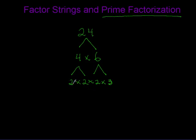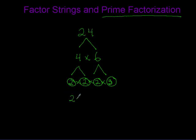Two is a prime number — the only even prime number — so we're going to go ahead and circle those. Three is also a prime number, so we're going to circle that. So if we're going to write the prime factorization of 24, we would write two times two times two times three.